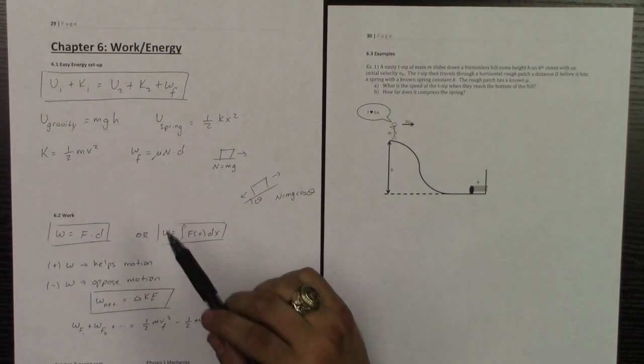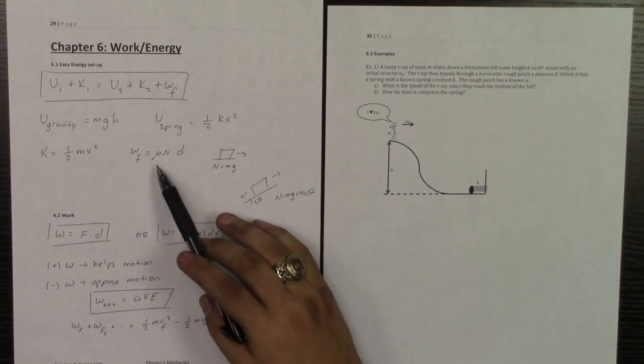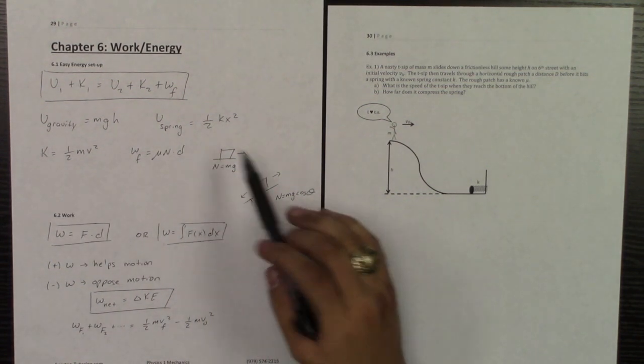Kinetic energy is 1 half MV squared, and that's if you have any movement. And the work done by friction is the force of friction times that distance d.